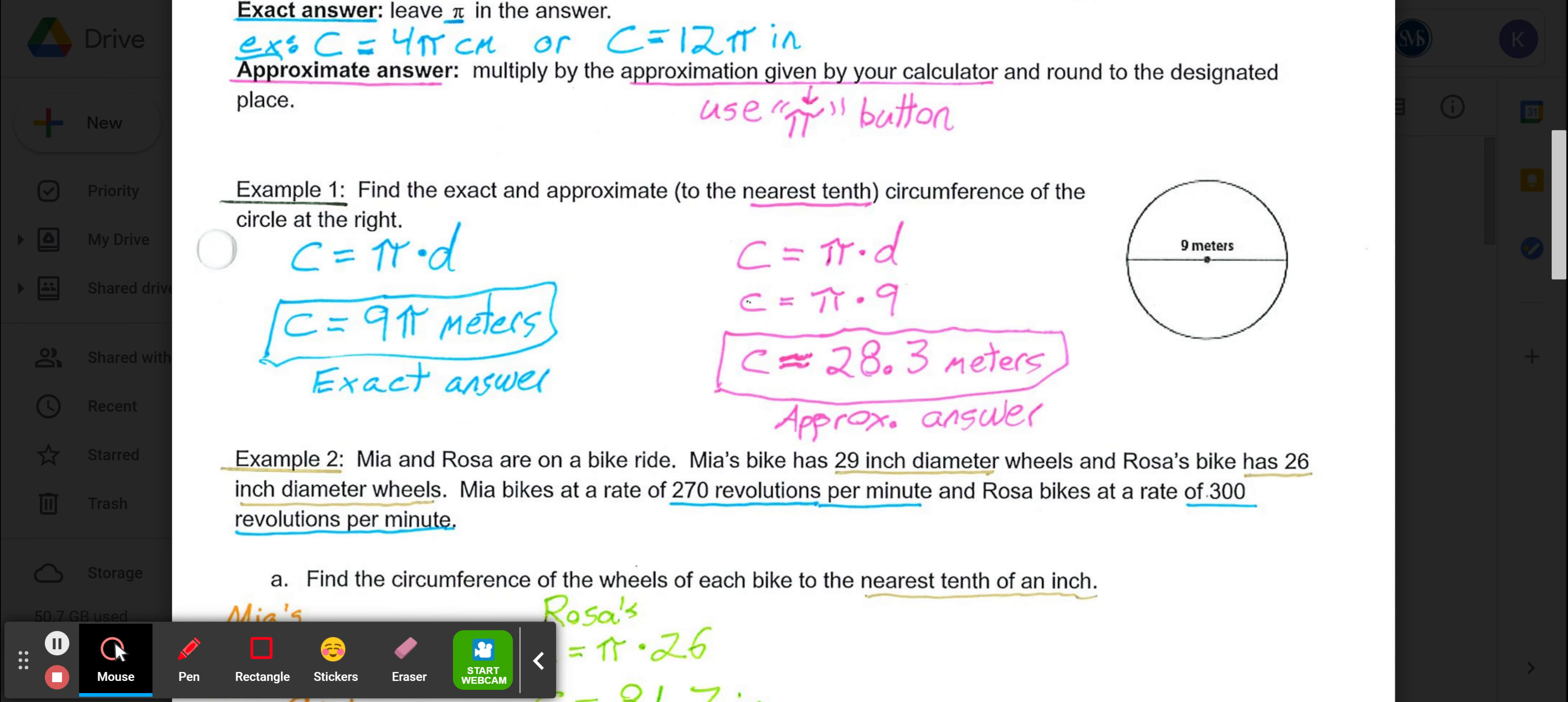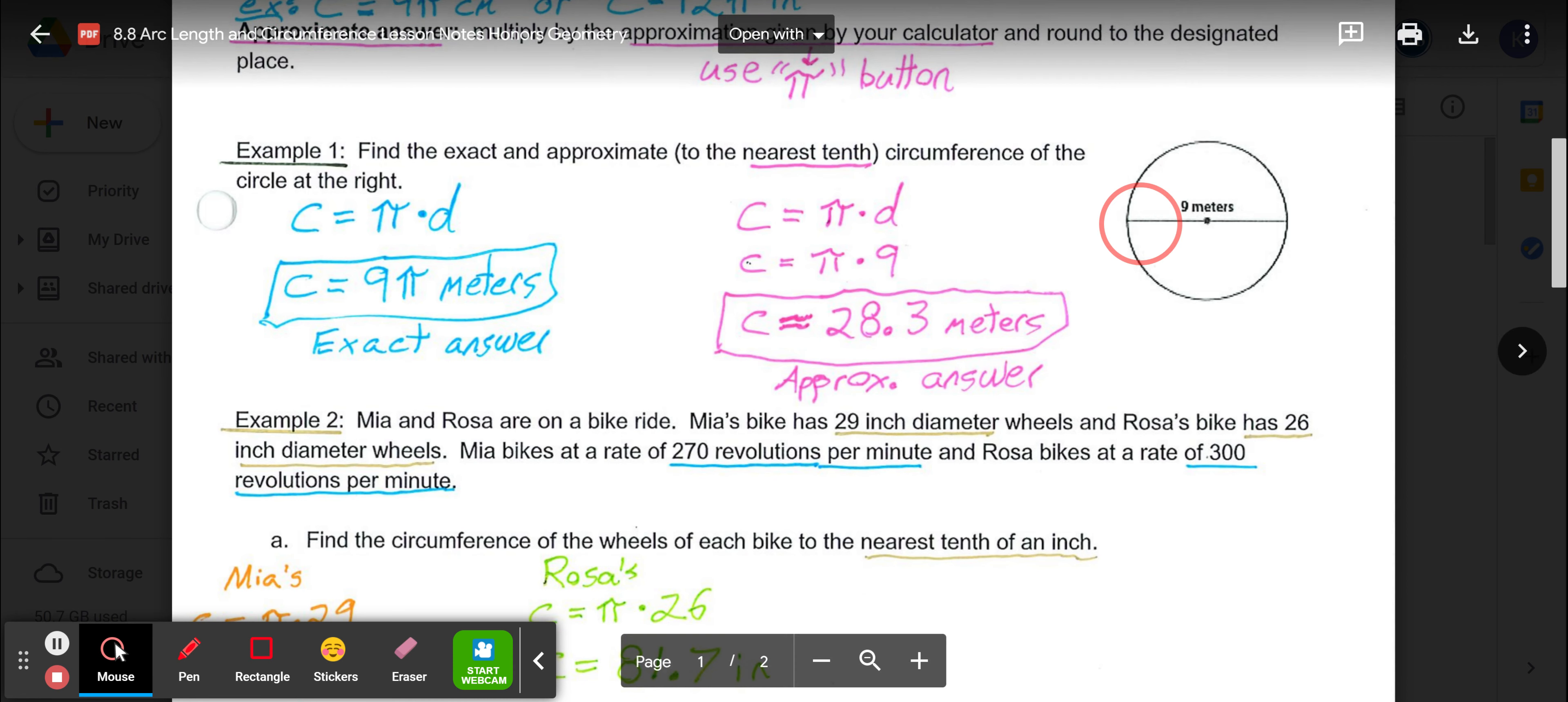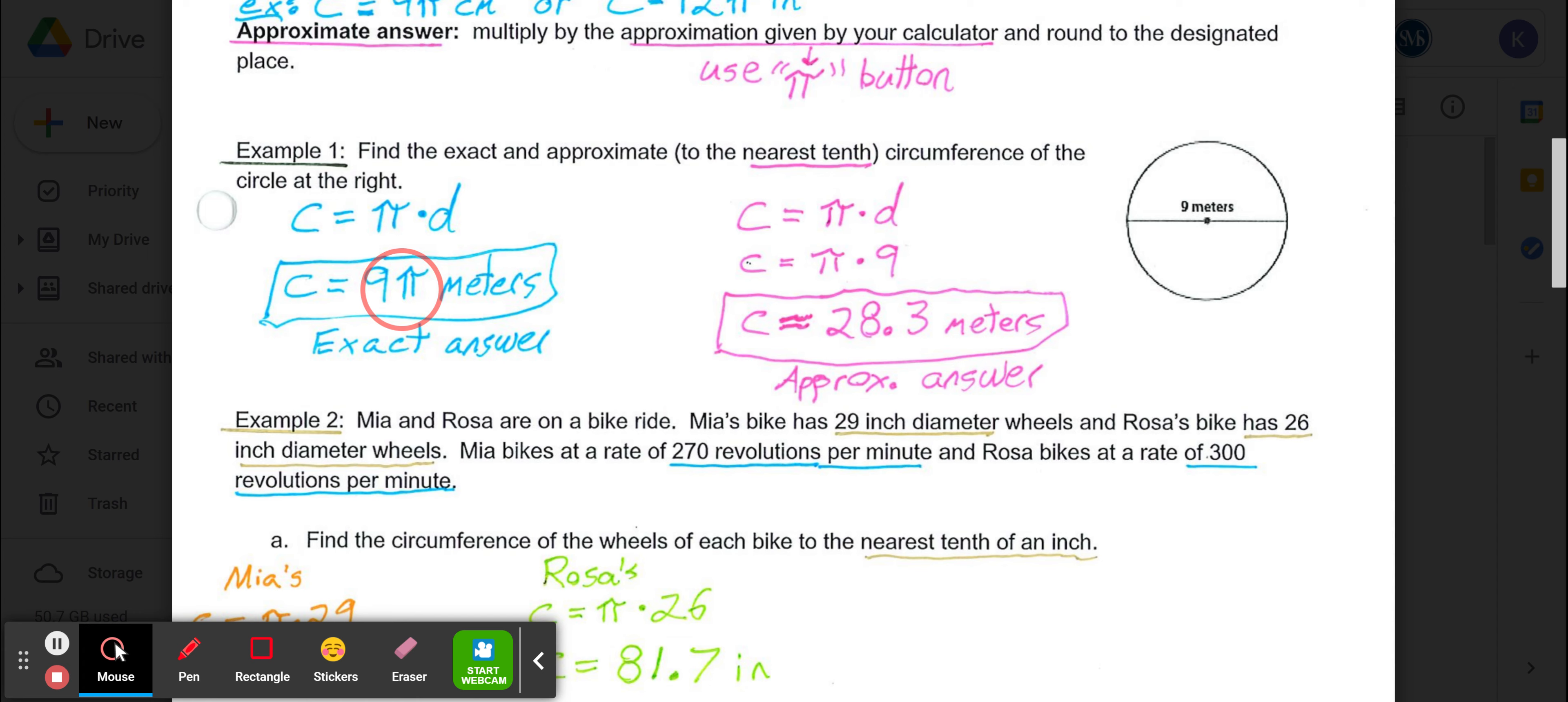For Example 1, find the exact and approximate to the nearest tenth circumference of the circle at the right. I have a diameter of 9. Circumference equals pi times diameter, so my exact answer would be circumference equals 9π meters. My approximate answer, instead of leaving pi in the answer, I'd use the pi button on the calculator multiplied by 9, and rounding that to the nearest tenth, our circumference is approximately 28.3 meters.